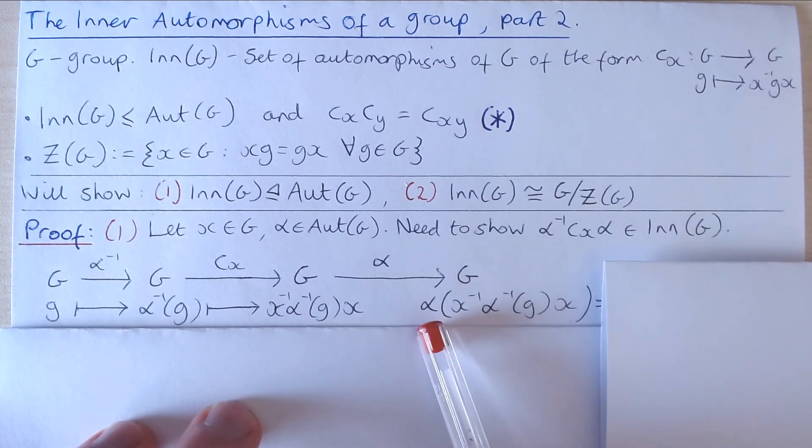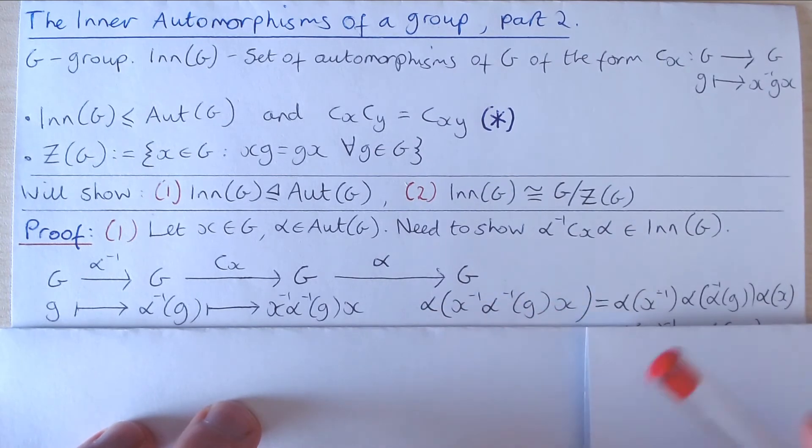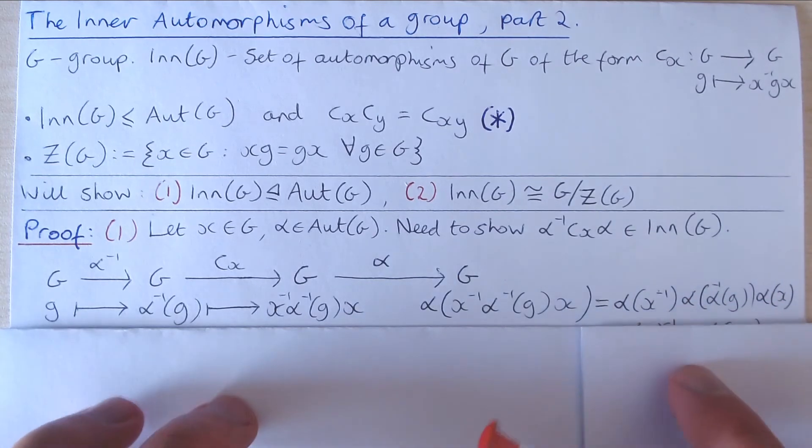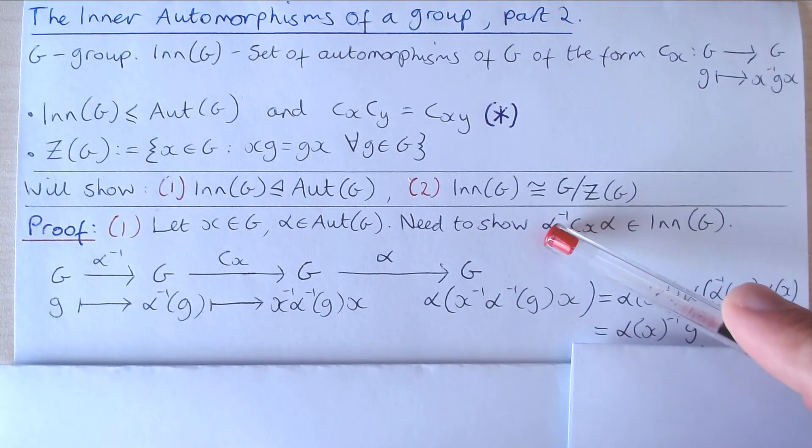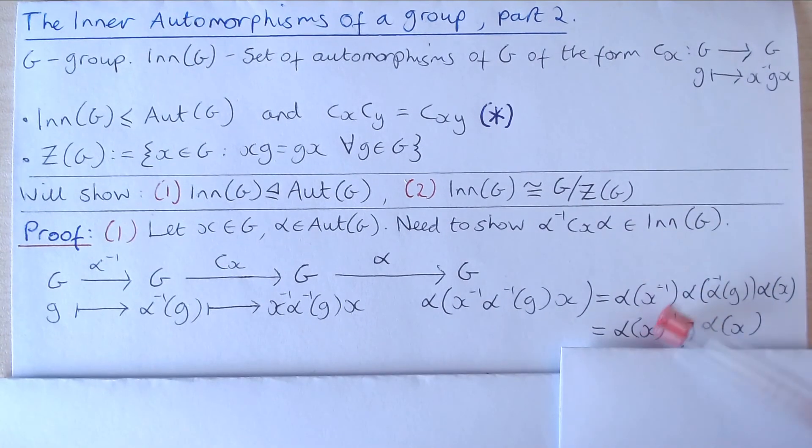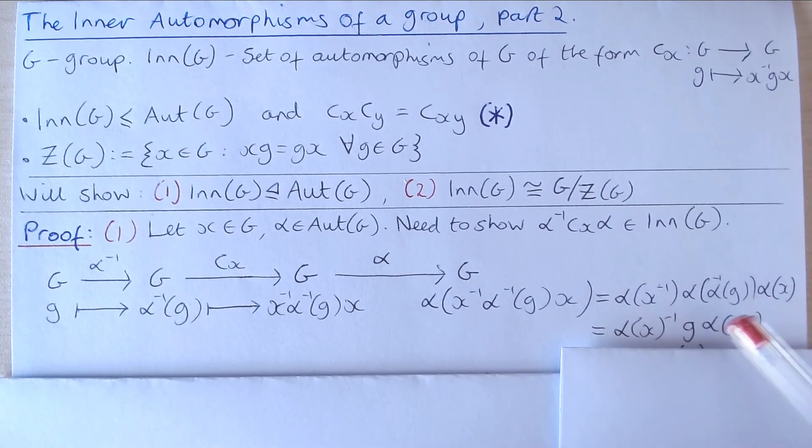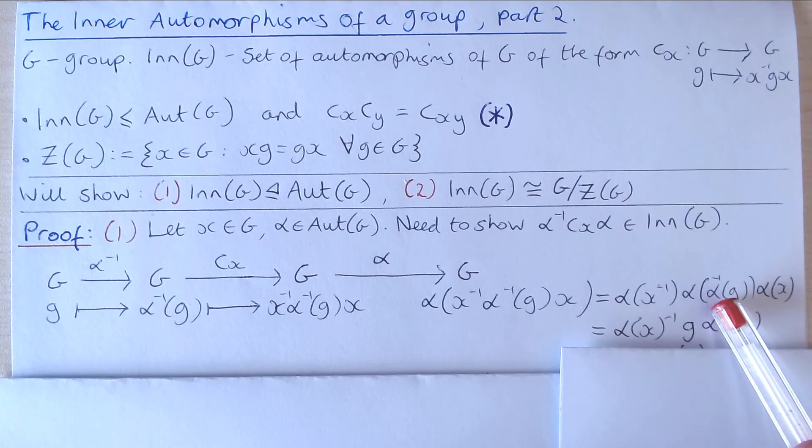Now as α is an automorphism it is a homomorphism. So we can write this expression as α(x⁻¹) followed by α(α⁻¹(g)) followed by α(x). And again because α is a group homomorphism we can actually take this inverse outside. We note that the composition of α with its inverse just gives us g back, and then we're left with α(x) on the end.